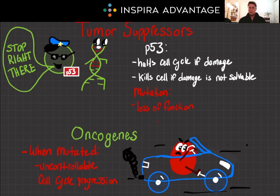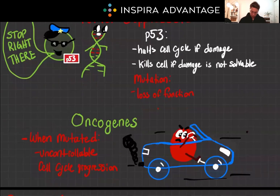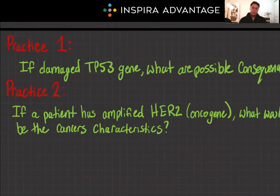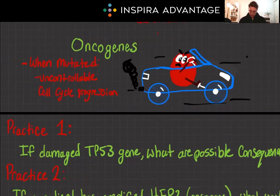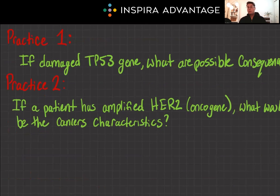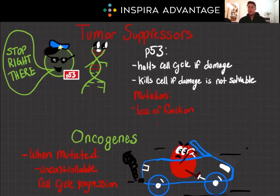Let's finish with some problems and a recap. For the first practice problem, consider a cell with damaged DNA and a non-functional TP53 gene. What are the possible consequences? Well, without a functional P53 protein, the cell may not adequately repair its DNA or initiate apoptosis, leading to the survival and division of a potentially cancerous cell.